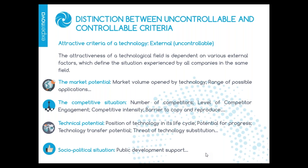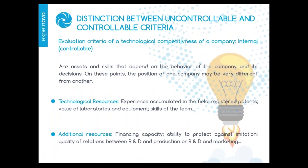What about the public development support? Evaluation criteria of the technological competitiveness of a company are internal — that is to say, controllable. They are assets and skills that depend on the behavior of the company and its decisions. On these points, the position of one company may be very different from another. Evaluation criteria include the technological resources, the experience accumulated in the field, the registered patents, the value of laboratory and equipment, the skills of the team, the financing capacity, the ability to protect against imitation, and the quality of the relation between R&D and production or between R&D and marketing.